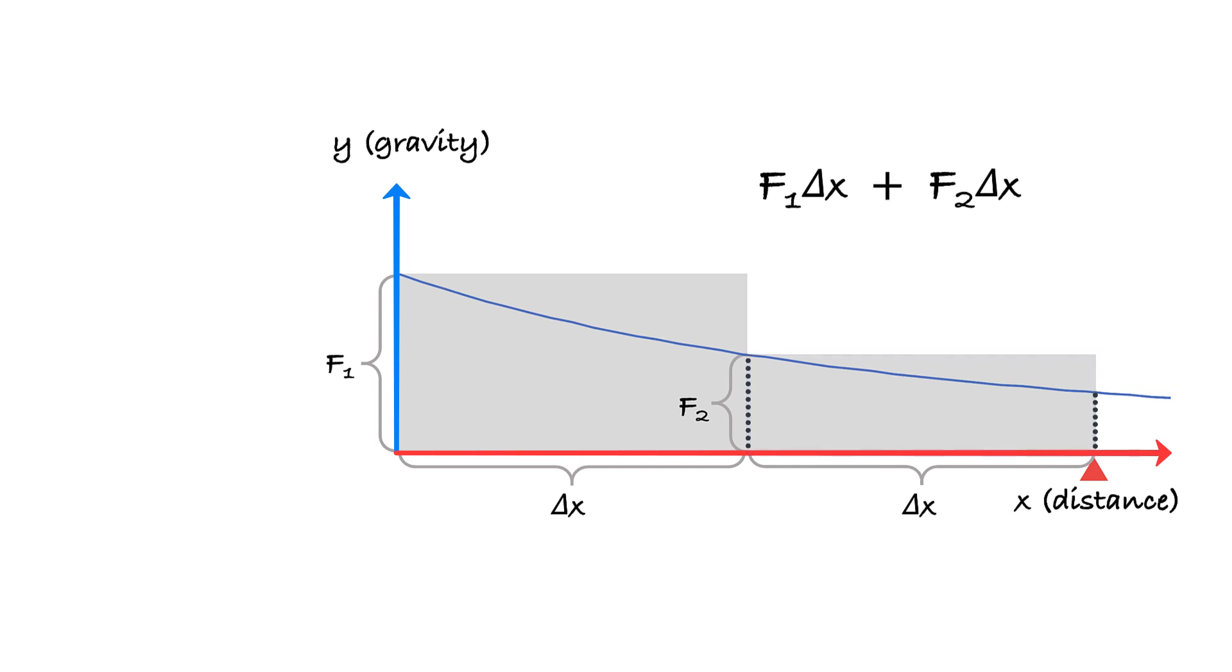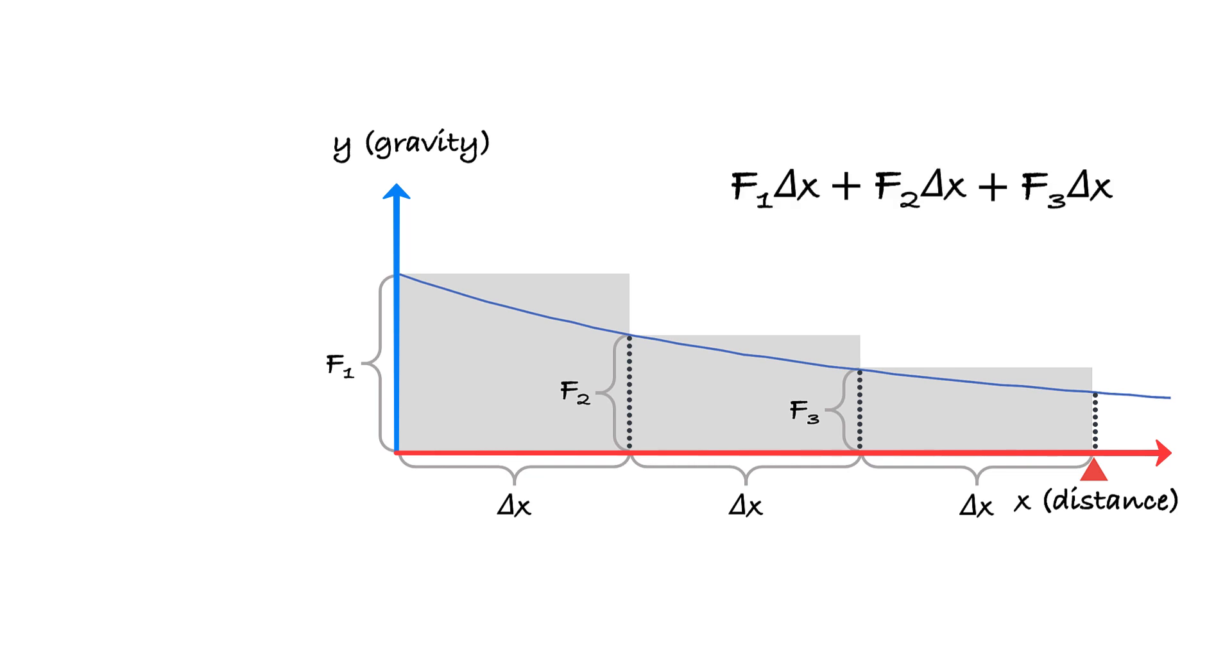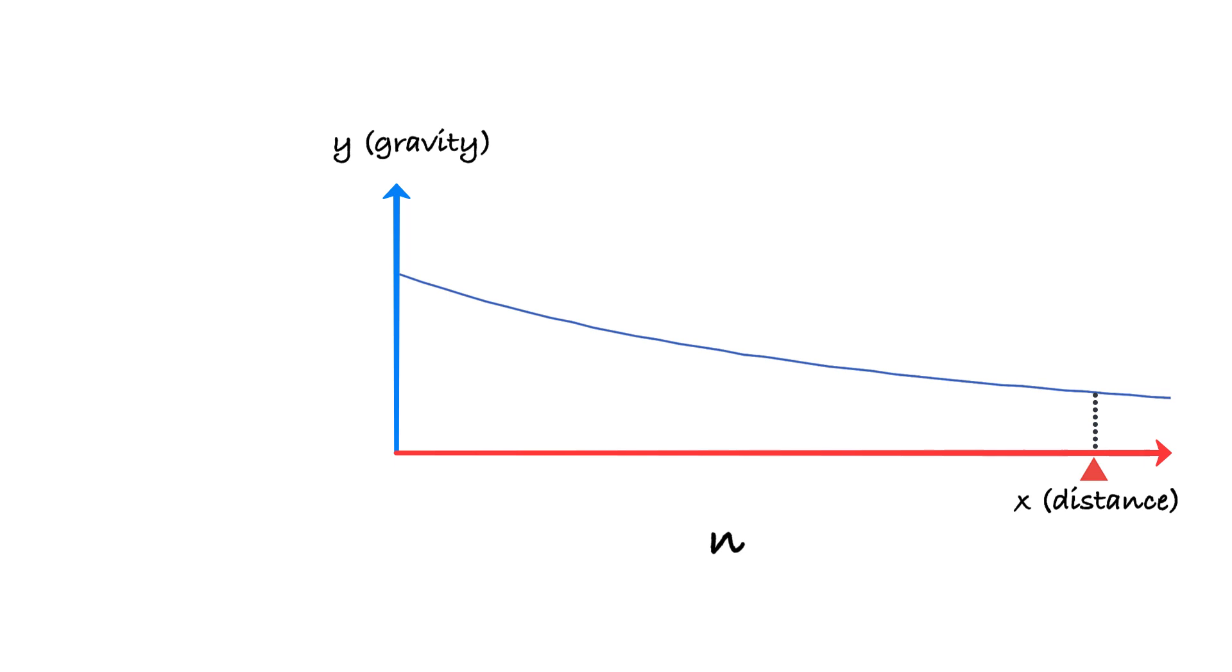It is a better approximation, but still not great. It would be even better if, instead of splitting the initial trajectory into two equal parts, we split it into three and would get the following for total work. Overall, if we pick some higher number n and split h into n equal parts, then this would be an even better approximation.